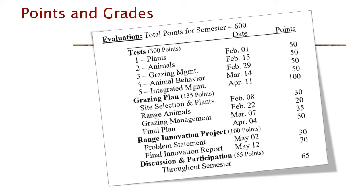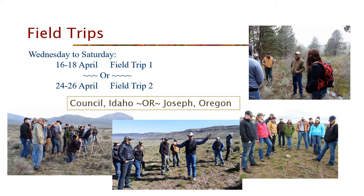The range plan is worth 135 points, so it's a pretty significant part of the class. It starts with selecting a site and talking about the rangeland plants and animals at the site, then making some grazing decisions, then putting it all together thinking about other things that affect that site and making a final plan. At the end of this class you'll have done a range management plan — a land management plan. The final project after the field trip is called a range innovation project, where we take what we learned in the field and bring it home. There are two field trips going Thursday through Saturday, April 16th to 18th or April 24th to 26th — you have a choice between whichever works for you.